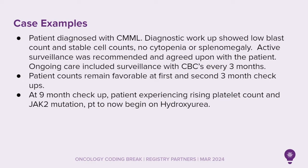Case example one: a patient diagnosed with CMML. The diagnostic workup showed low blast count and stable cell counts, no cytopenia or splenomegaly. Active surveillance was recommended and agreed upon with the patient. Ongoing care included surveillance with CBCs every three months. The patient's counts remained favorable at the first and second three-month checkups. At the nine-month checkup, however, the patient was experiencing a rise in platelet count, and the JAK2 mutation was present. The patient is now to begin hydroxyurea, which means the patient is no longer in active surveillance, and the hydroxyurea is considered subsequent treatment.